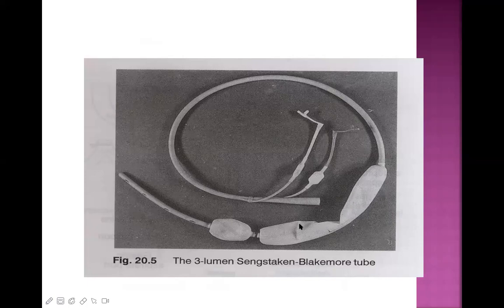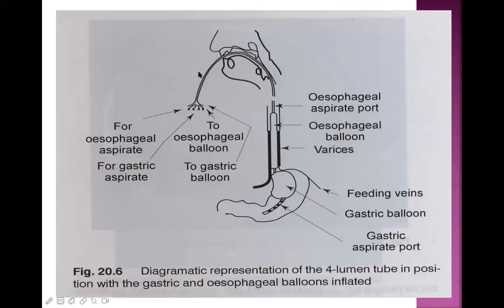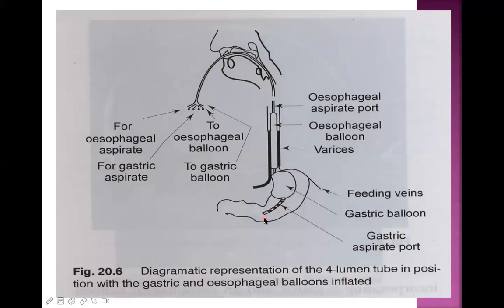The Sengstaken-Blakemore tube is inserted orally into the esophagus. The esophageal balloon is inflated to press against the esophageal wall, compressing the bleeding blood vessels. The gastric balloon is also distended and secured at the gastroesophageal junction. The tube has multiple openings and channels (three or four lumens) for aspiration, allowing ongoing monitoring of bleeding and management.